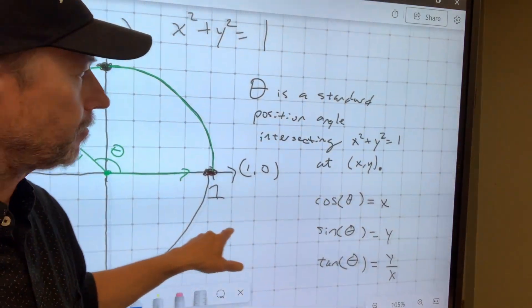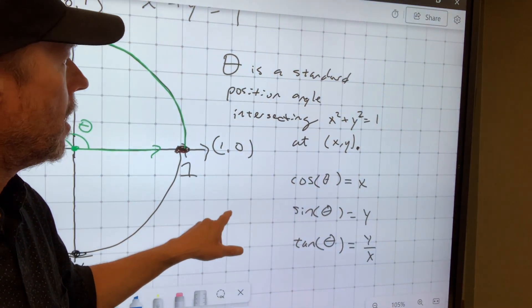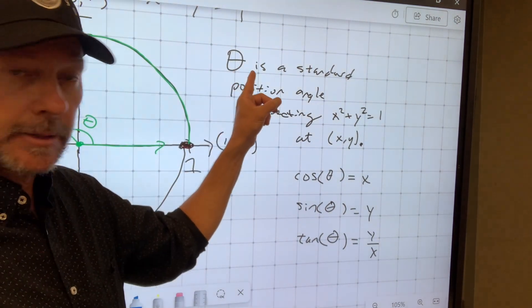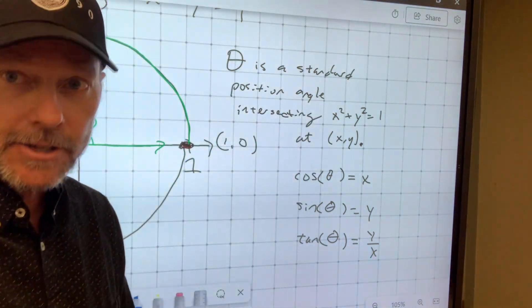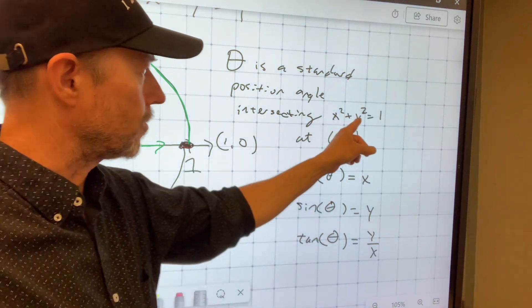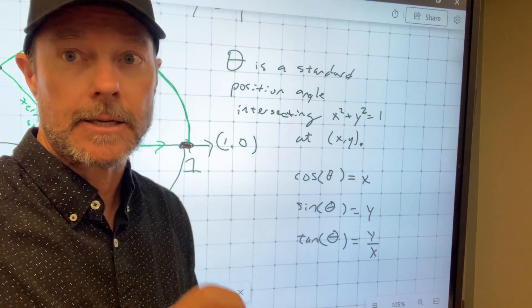Now, we're ready for the definition. The definition says, make sure I've got it in the screen, that theta is the symbol we're going to use for the angle. Theta is a standard position angle intersecting the unit circle x squared plus y squared equals one at a point labeled (x,y).